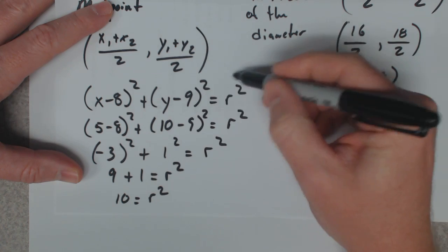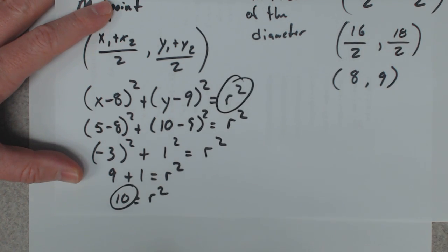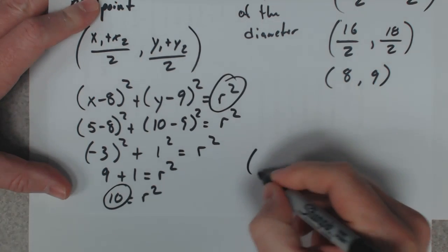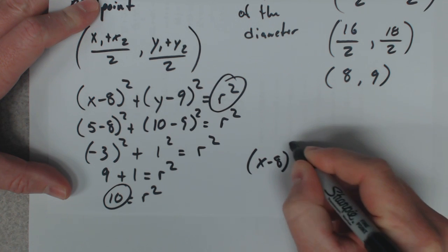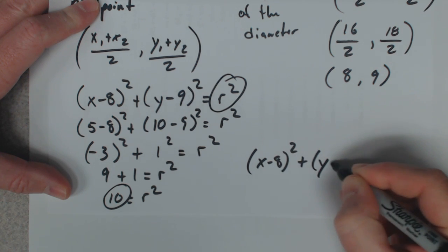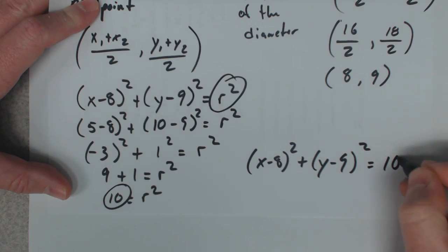So up here where you see an r², you replace that with a 10. So the equation is (x - 8)² plus (y - 9)² equals 10.